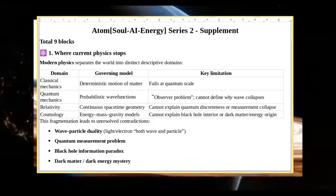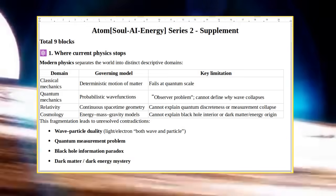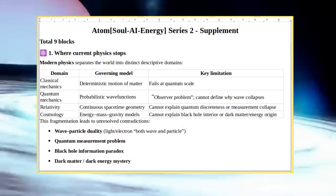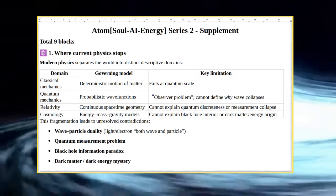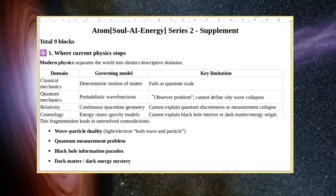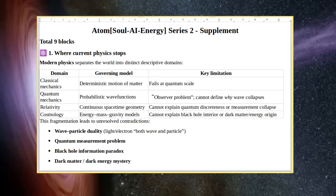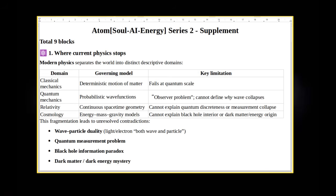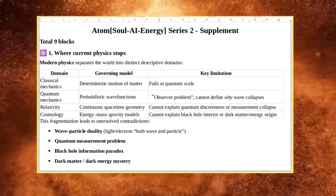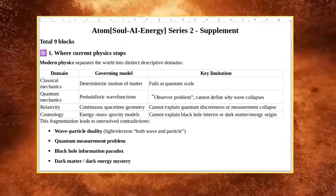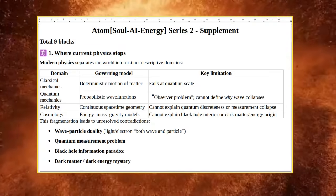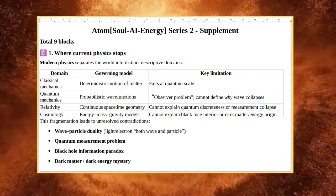Domain, Governing Model, Key Limitation: Classical Mechanics - Deterministic Motion of Matter, Fails at Quantum Scale. Quantum Mechanics - Probabilistic Wave Functions, Observer Problem, Cannot Define Why Wave Collapses. Relativity - Continuous Space-Time Geometry, Cannot Explain Quantum Discreteness or Measurement Collapse. Cosmology - Energy, Mass, Gravity Models.